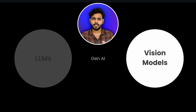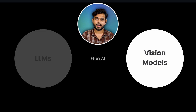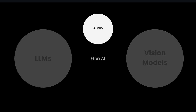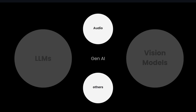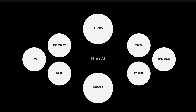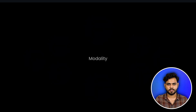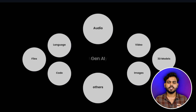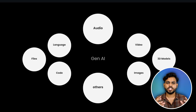Now, these are the main two components of Generative AI. But we also have models that can generate new audio and other types of outputs. So this is basically the whole map of Generative AI. Now here comes a very important concept called modality. Modality basically means what are the different kinds of things a Generative AI model can generate.